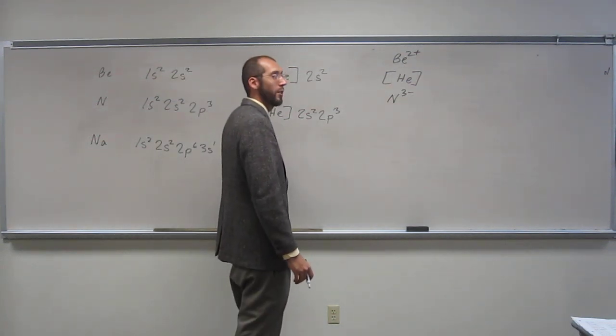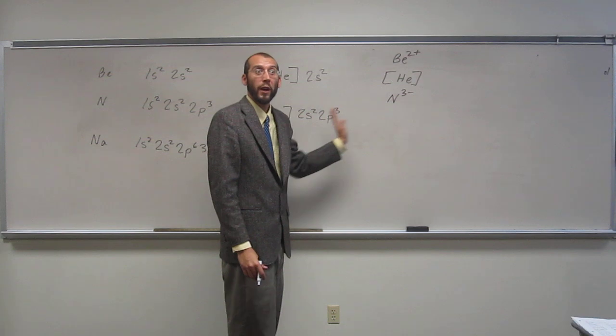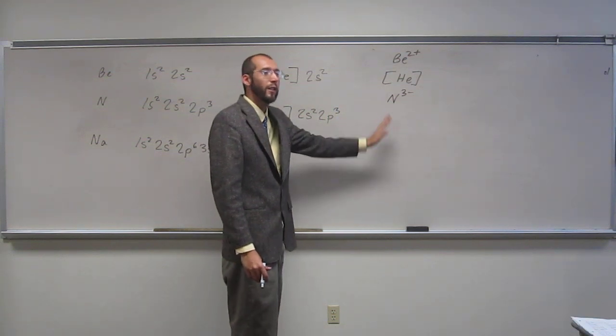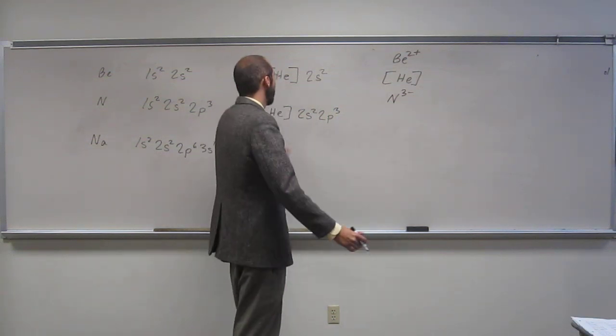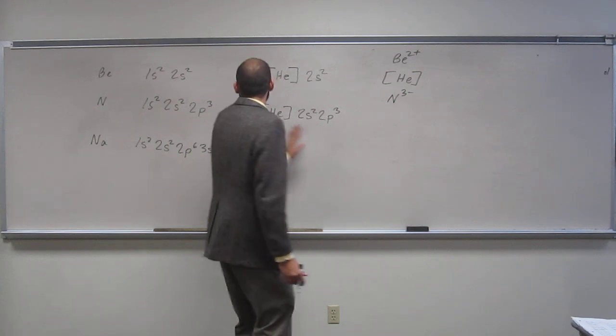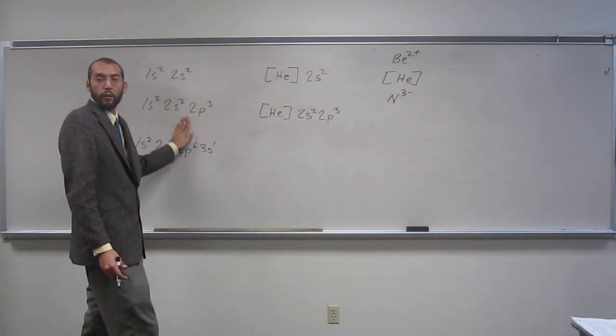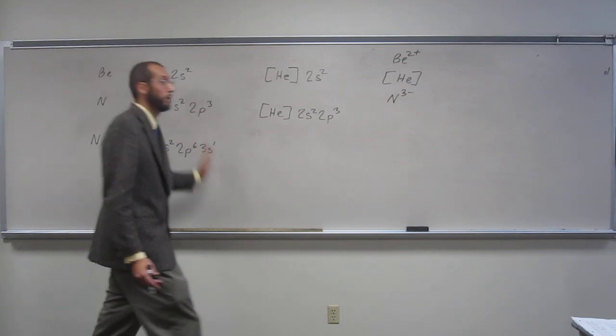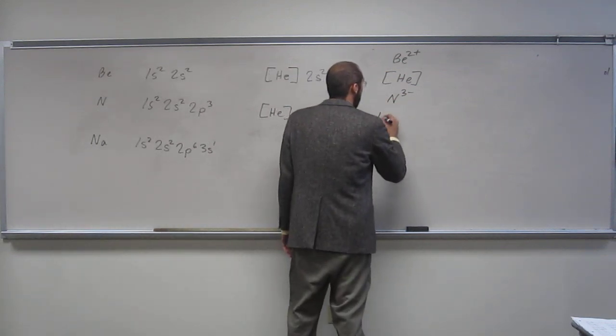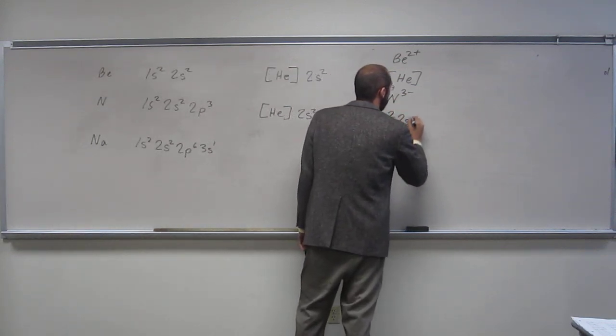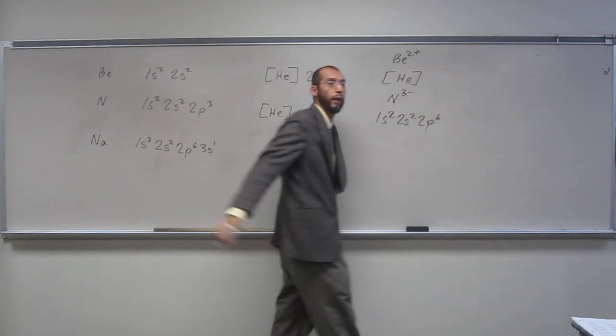So should we, I don't think we need to write the full electron configuration. Should we write the full electron configuration for this ion? Let's just write it, okay, let's just write it, so it's going to be the same as this thing here, plus what? Three more electrons, right? Okay, so what is it going to be? 1s2, 2s2, 2p6, right?